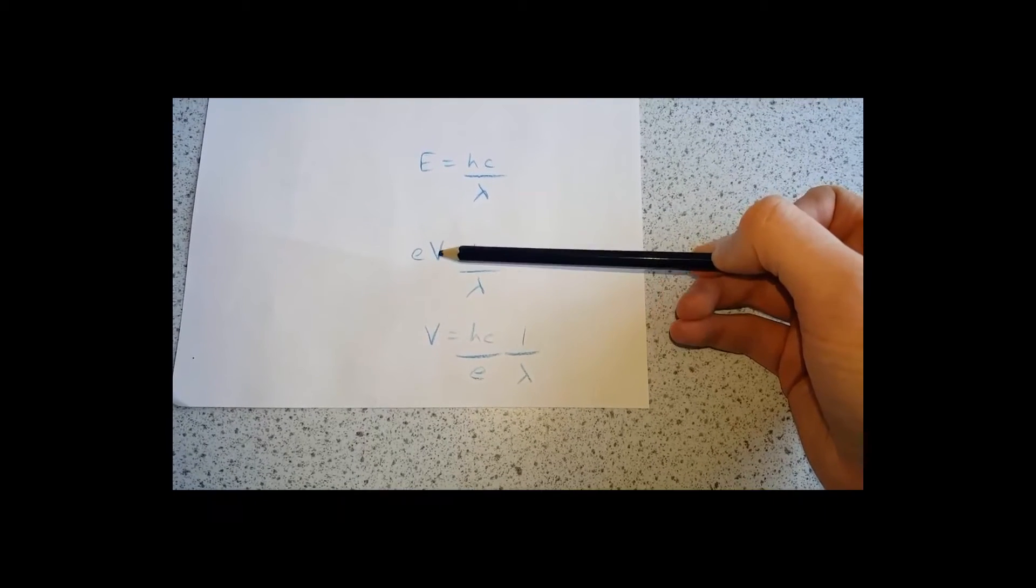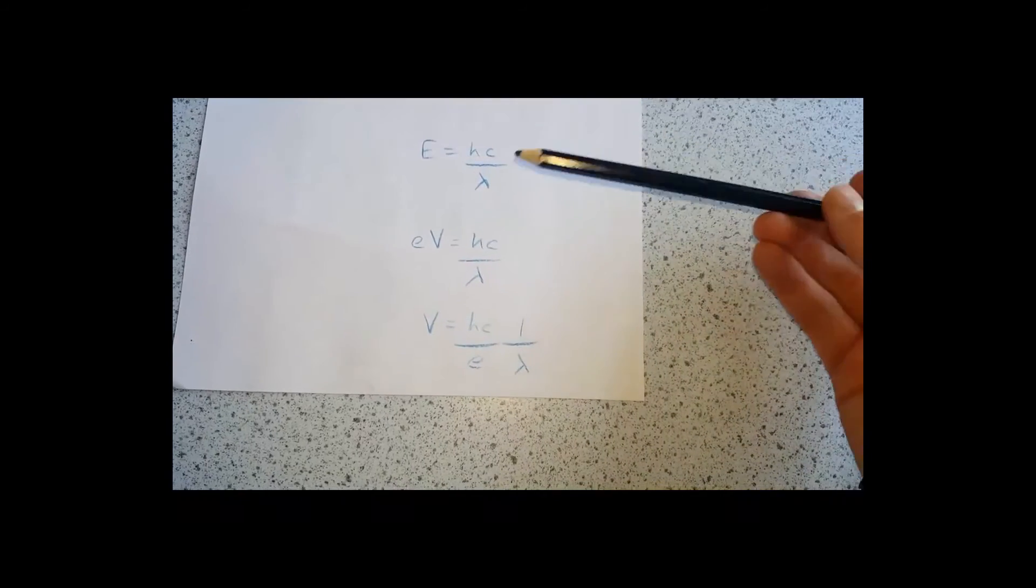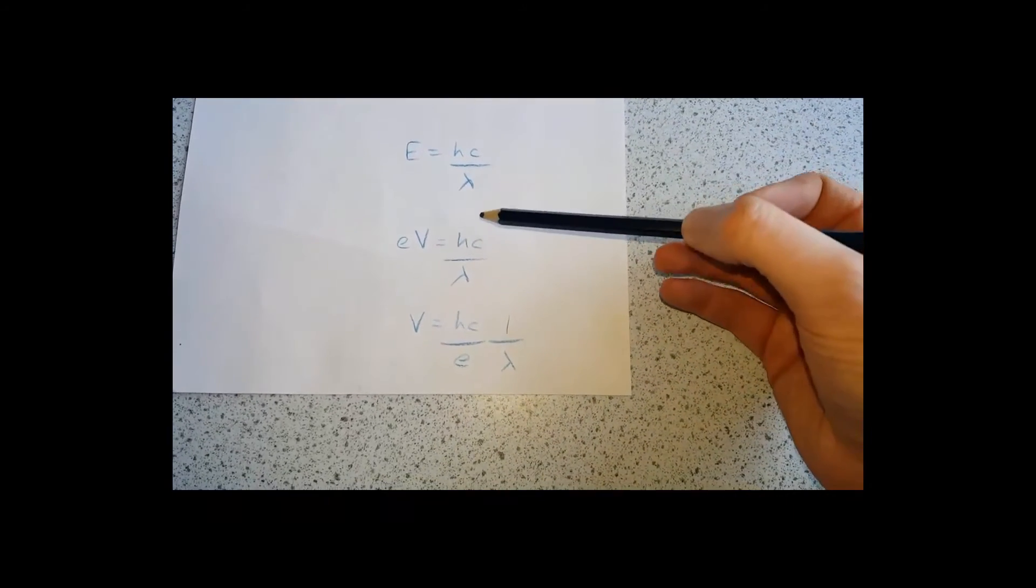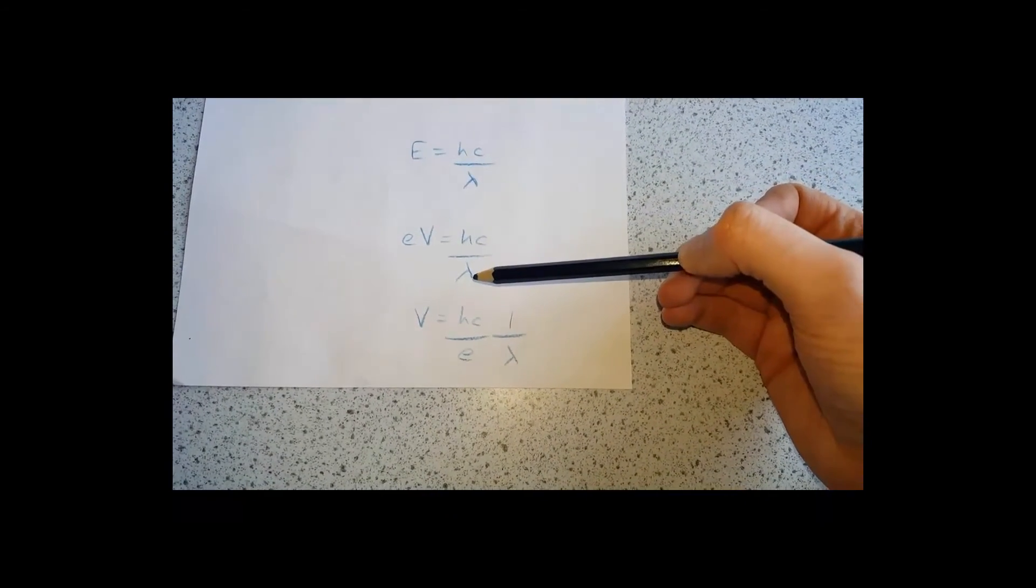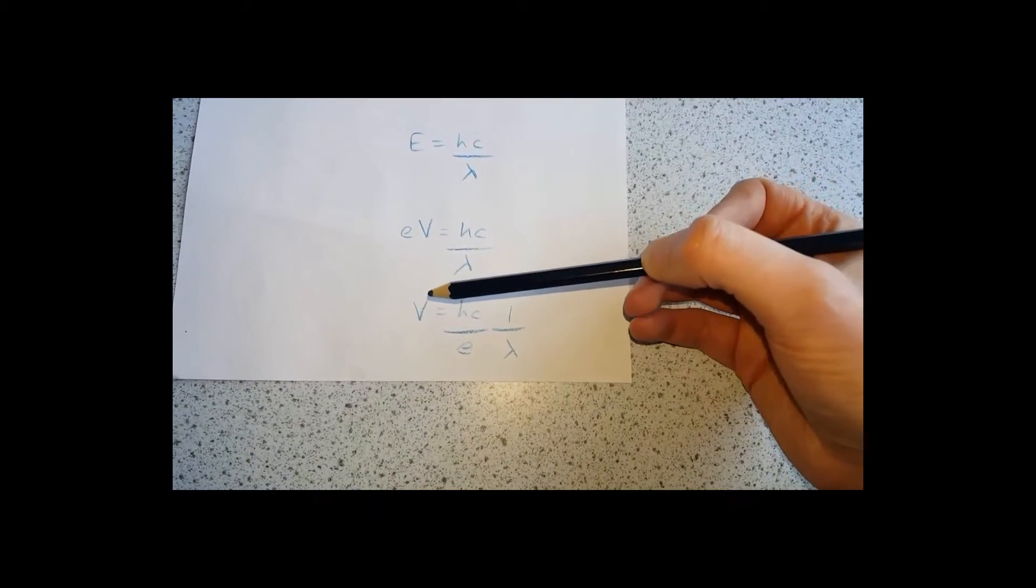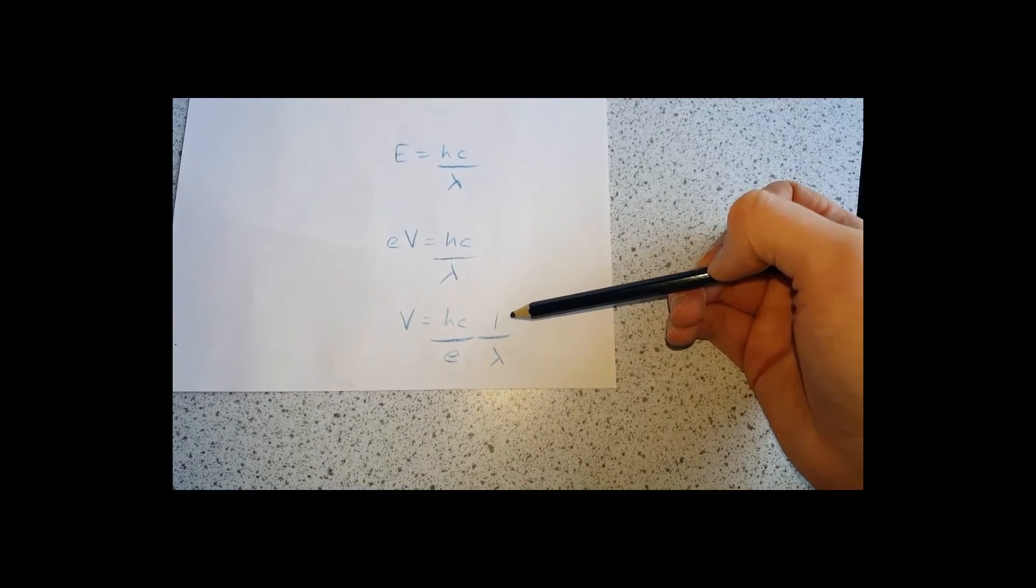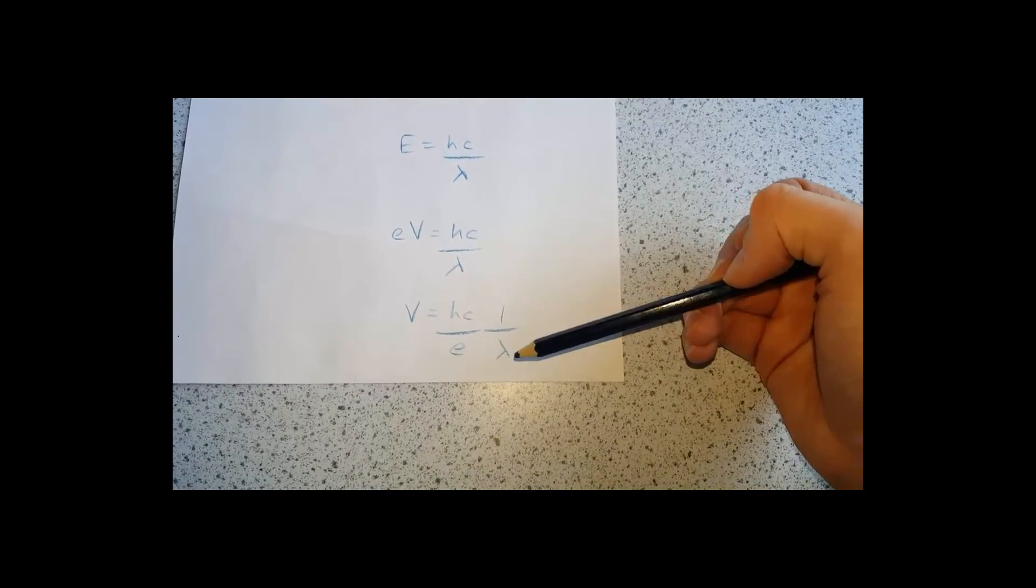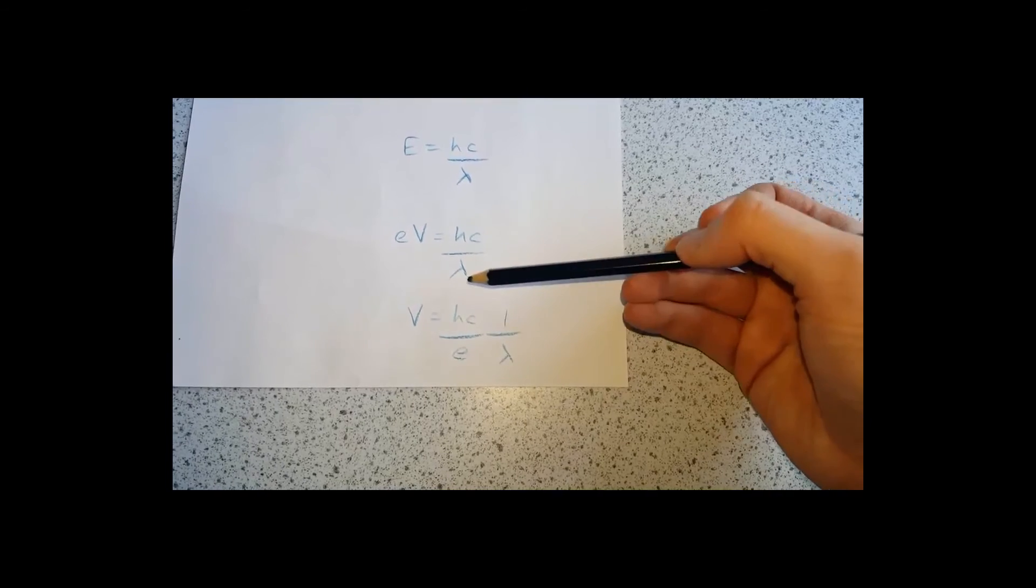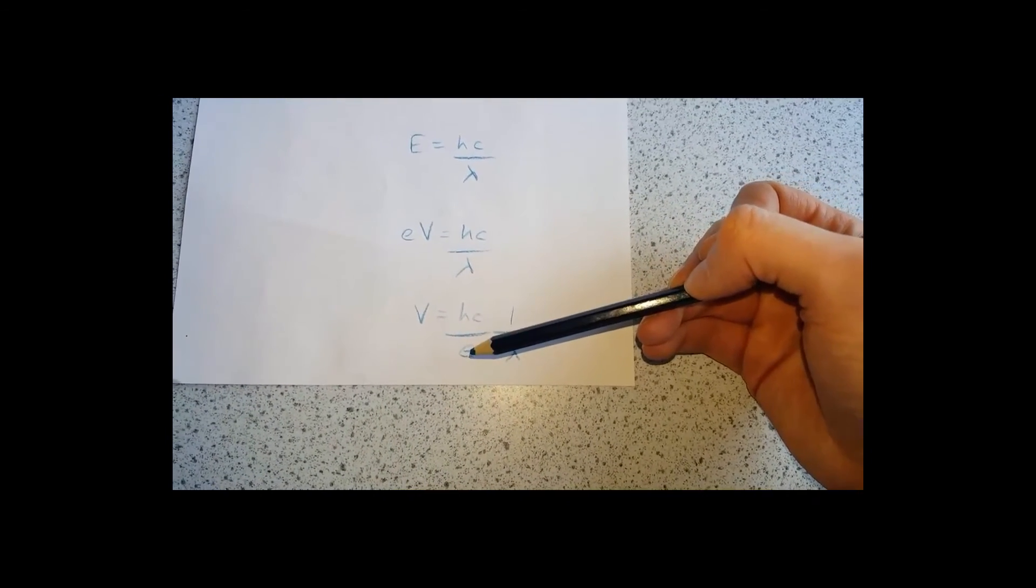Because that's the energy per coulomb. And that's equal to the Planck constant times the speed of light divided by the wavelength. So using the data we've collected, you plot a graph of voltage on the y-axis against 1 over lambda on the x-axis. And the gradient of that line would be hc divided by e.